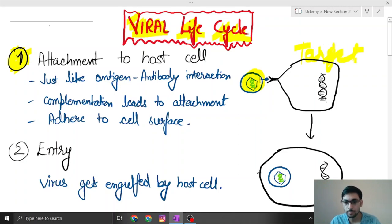Here you can see this drumstick type of receptor which it has and it is complementary to the receptors on the host cell. This works like how antigen and antibodies attach to each other. There is a complementation which leads to attachment of virus to host, and then it adheres to cell surface.